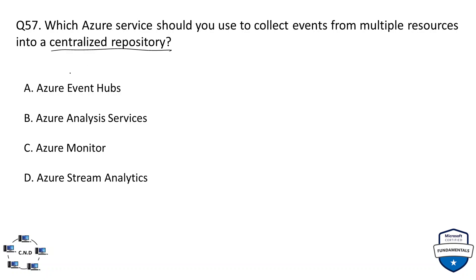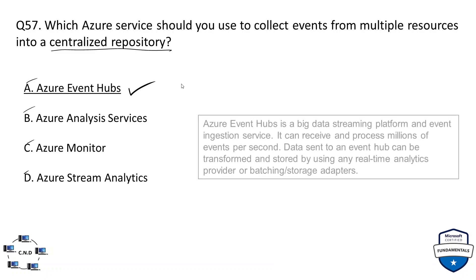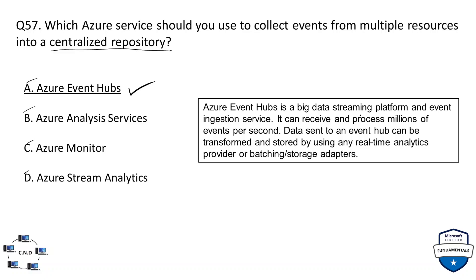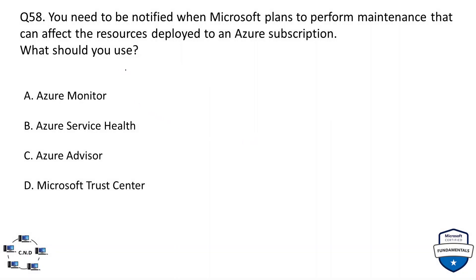Question 57: which Azure service should you use to collect events from multiple resources into a centralized repository? Options: A) Azure Event App, B) Azure Analysis Services, C) Azure Monitor, or D) Azure Stream Analytics. The correct option is Azure Event Hub. Azure Event Hub is a big data streaming platform and event ingestion service that can receive and process millions of events per second.